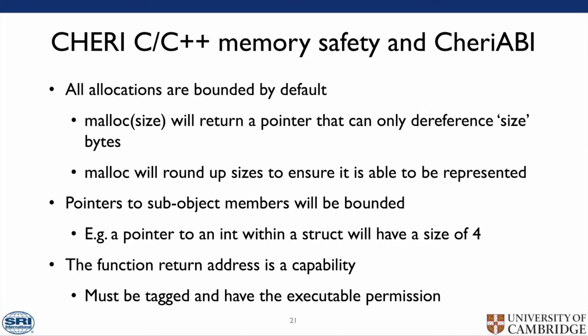CHERI ABI provides C and C++ memory safety — all allocations are bounded by default. So malloc of a given memory size will return a pointer that can only dereference that many bytes. However, due to the floating-point-style compression of bounds, malloc may need to round up the size to ensure it is representable. Pointers to sub-object members will be bounded — for example, a pointer to an int within a struct will have a size of 4. The function return address is a capability, meaning it must be tagged and have an executable permission, so even if there was a buffer overflow, it would be very difficult for an attacker to override the return address with another code capability.